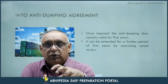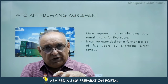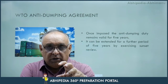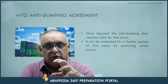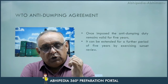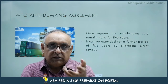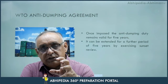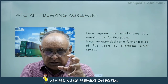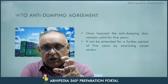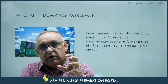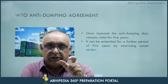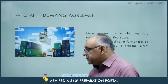Jab ek baar anti-dumping duty impose kar di jaati hai, to it remains valid for five years. Beyond five years also it can be extended if the need is there by exercising the Sunset Review clause. Jab anti-dumping duty ko impose kiye five years ho jaate hain, toh us ke baad agar usko extend karna hota hai, to under the Sunset Review clause, usko review karna hota hai — whether there is need to extend this anti-dumping duty further or not. Agar zaroori samjha jaata hai, then it can be extended for the next five years period also.